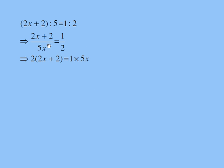Now, we can cross multiply and multiply 2x plus 2 by 2, like this. And then on the right hand side, I multiplied 1 by 5x. Here, I distributed 2 over 2x plus 2. I get 4x plus 4. On the right hand side, I have 5x times 1, which is 5x.